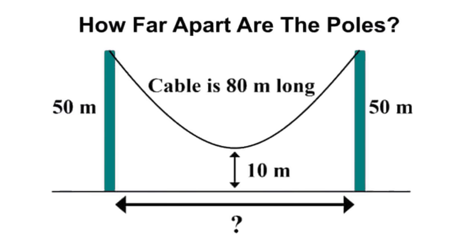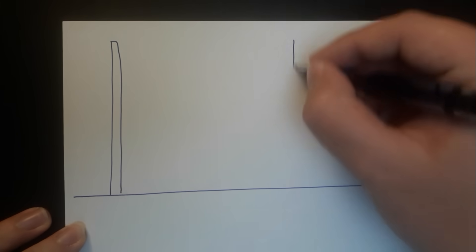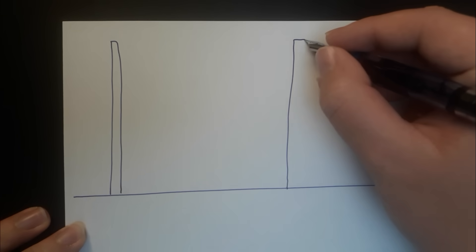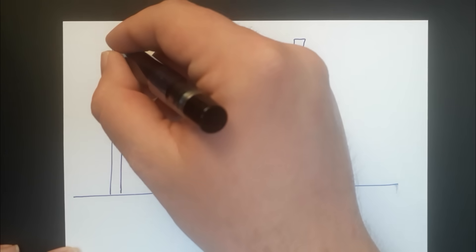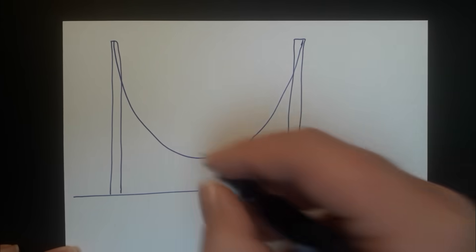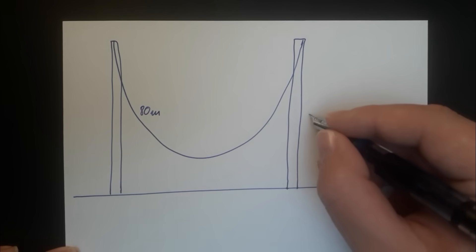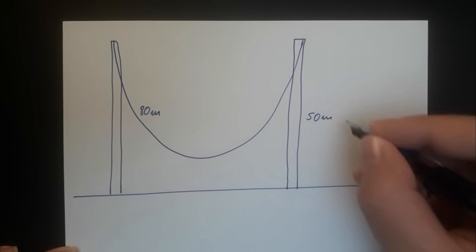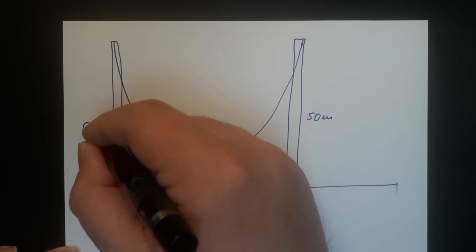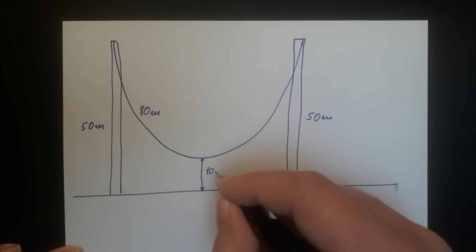So how do we solve this problem? Let's observe the following picture. We have the first pole, we have our ground, and we have the second pole. The cable is hanging from the top of these poles, and the length of that cable is 80 meters. The poles are of the same height, which is 50 meters. The cable is hanging 10 meters above the ground.